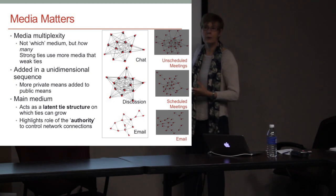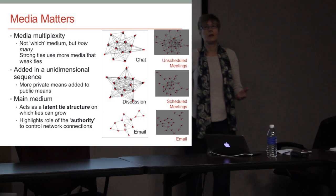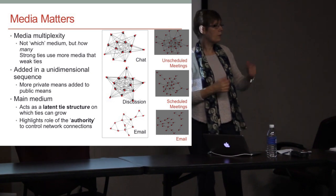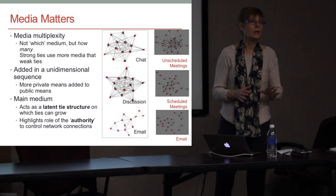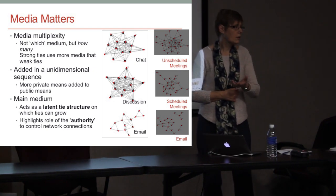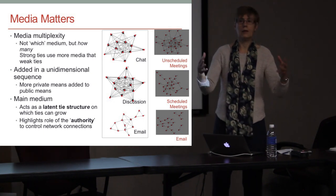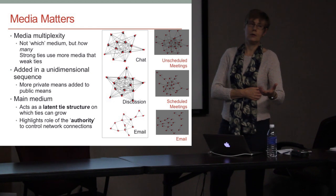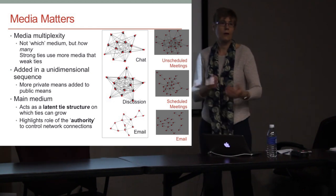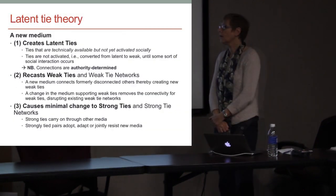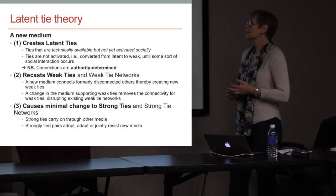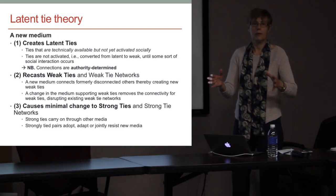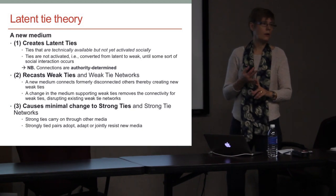At a conference, for example, by being here at the same time — organized by somebody who brought people together — you've made an environment where people can start talking to each other. That is the latent tie structure on which ties can then start developing. A new medium creates latent ties — ties that are technically available but not yet activated socially. You start an online class or discussion group: you put the platform there, everybody's on the mailing list, everybody got a welcome message, everybody's seen the list of people. That's as far as it's gone.